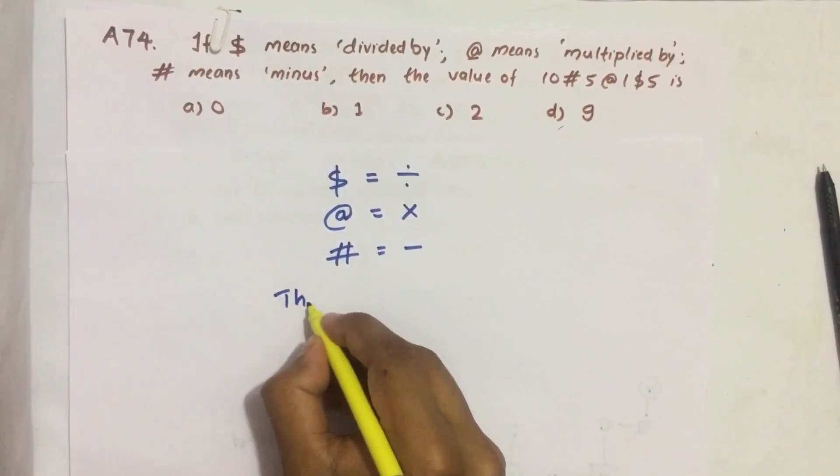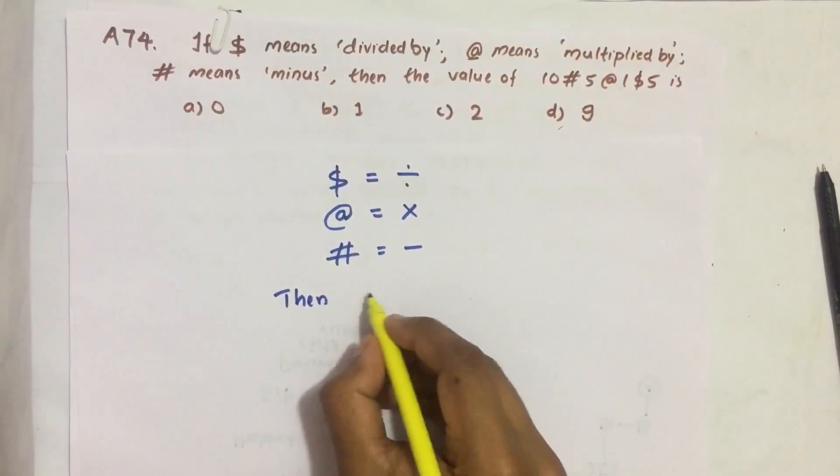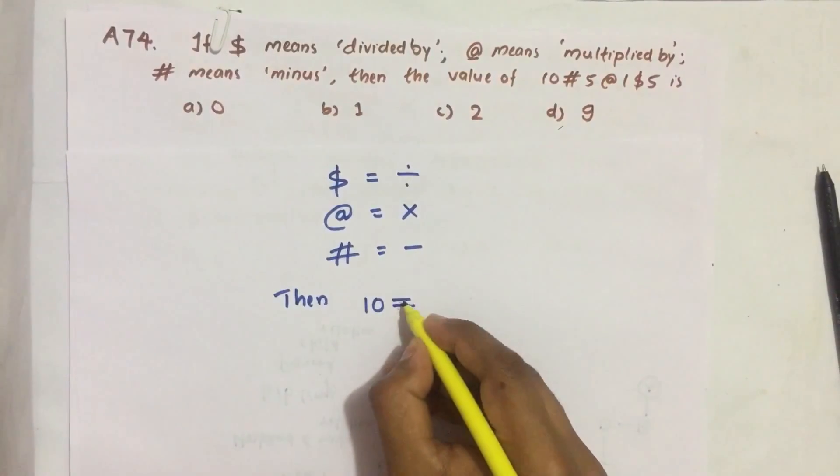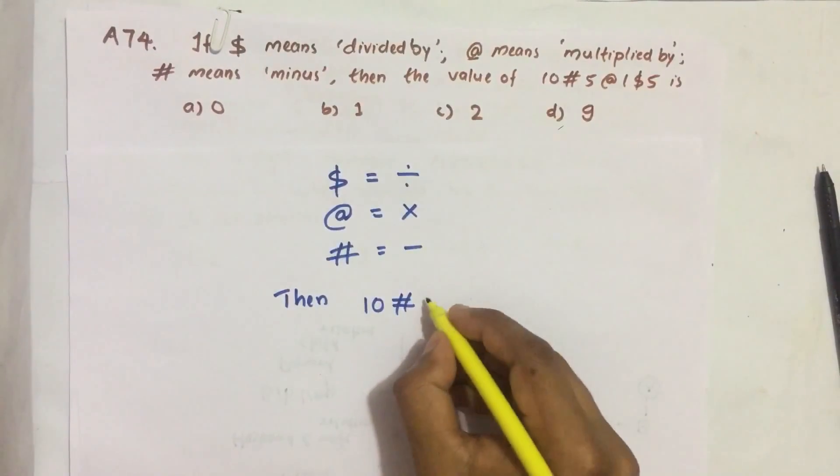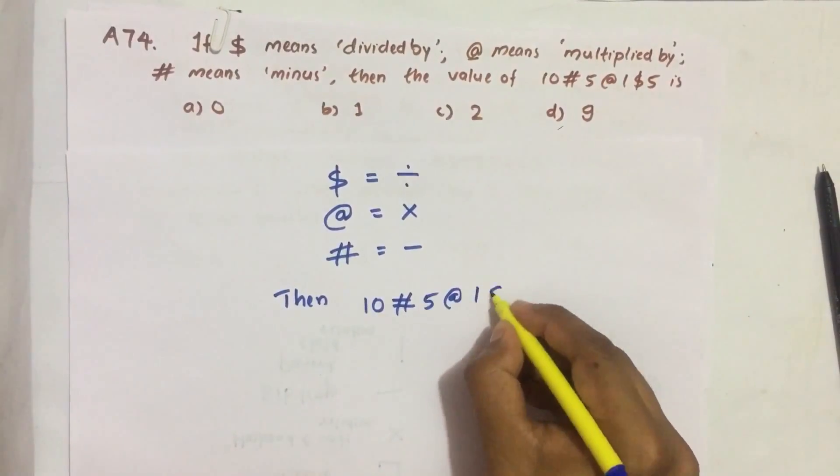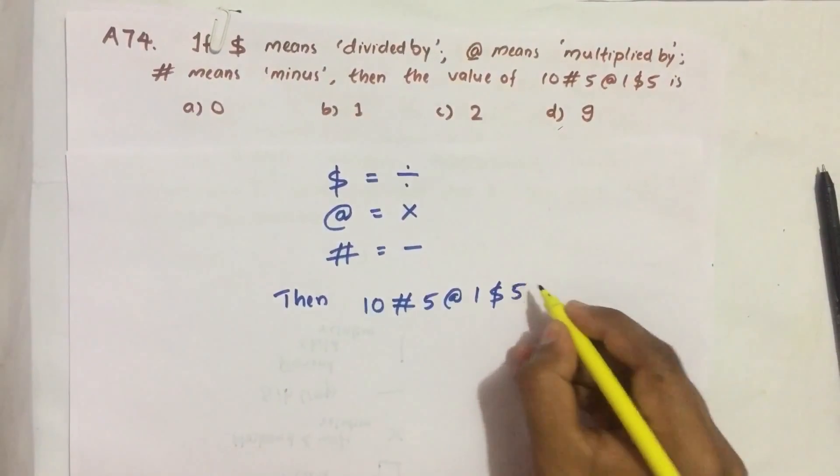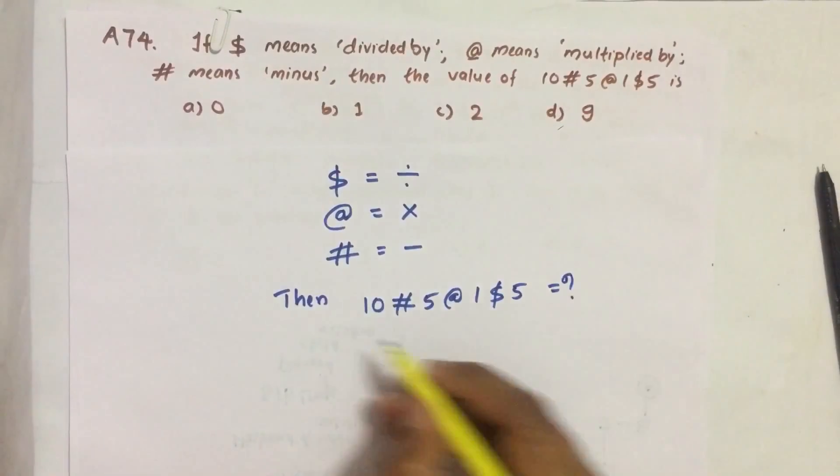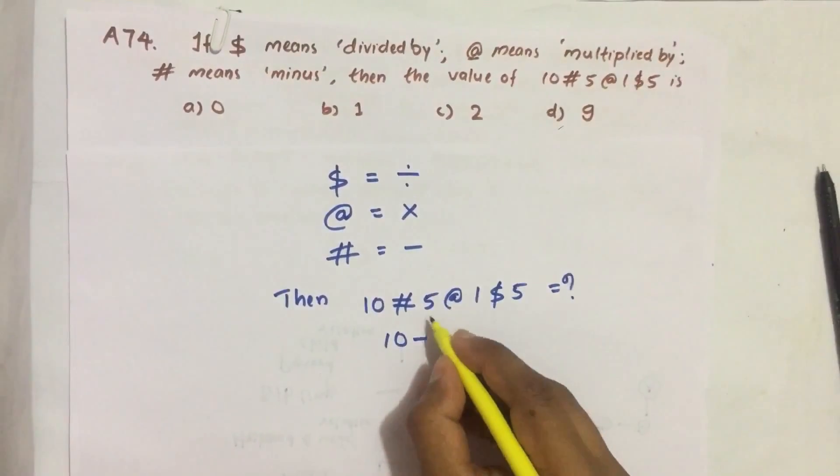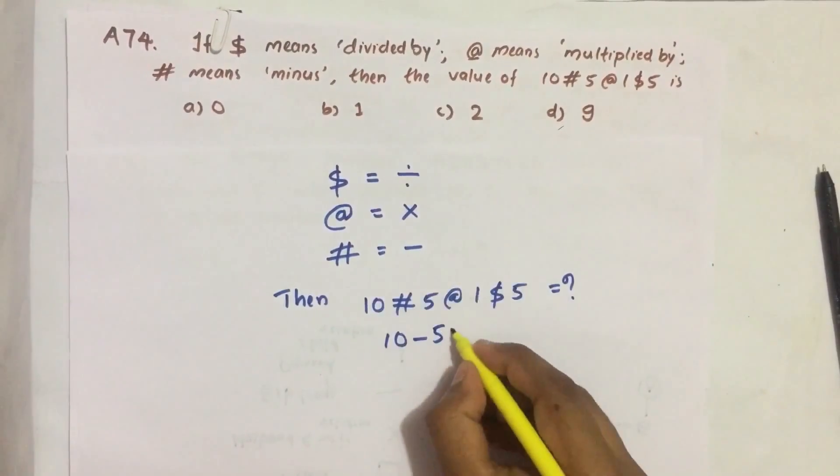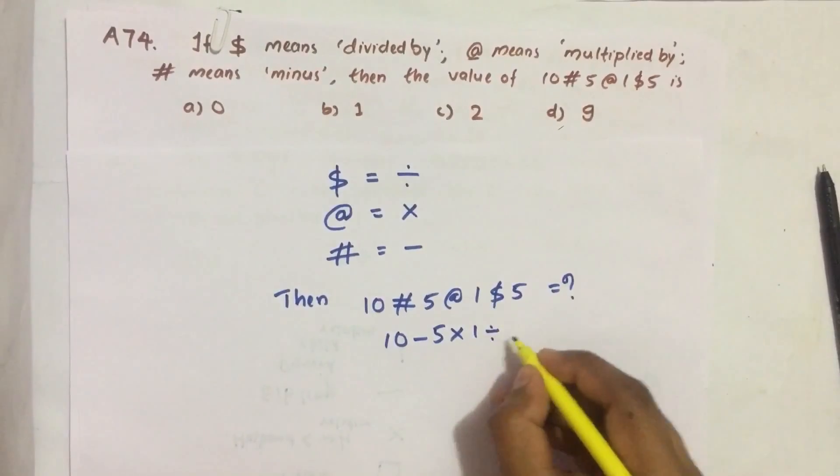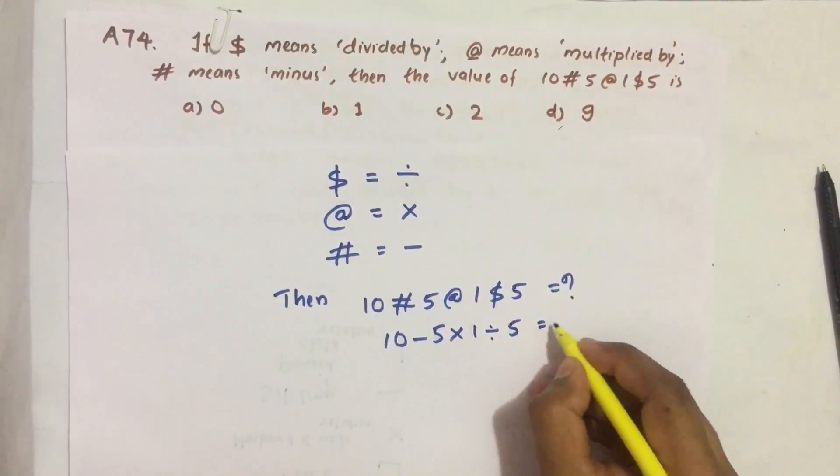Then what is the value of 10 hash sign 5 at sign 1 dollar sign 5 equal to what? This we can write: 10 hash sign means minus, 5 at sign means multiplied by, 1 dollar sign means divided by 5 equal to what?